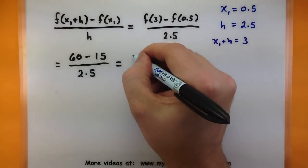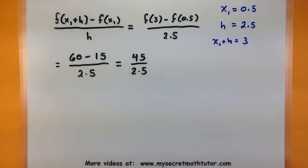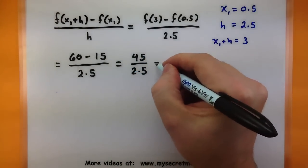Working this out, I get 45 over 2.5, and that reduces to 18.